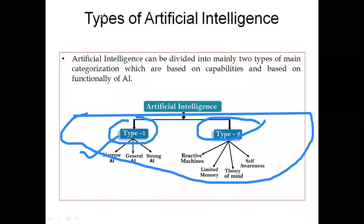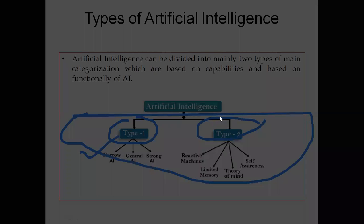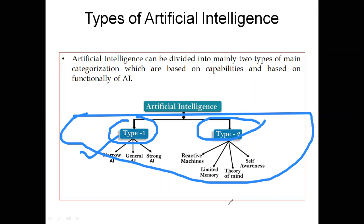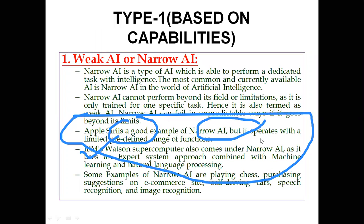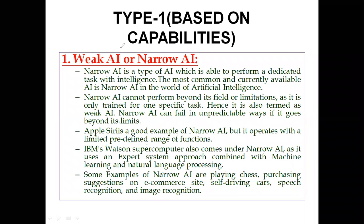We'll discuss each of these types in detail. Today we'll mainly target Type 1, which is based on capabilities. Capability means the extent to which a system can perform a task — that is what defines capability.